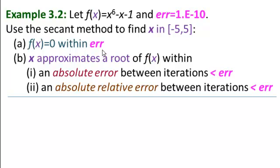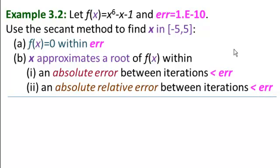That's like the previous problem that we did. Part B: x approximates a root of f(x) within — and there are two parts here. Part 1: an absolute error between iterations smaller than 10 to the minus 10. And Part 2: an absolute relative error between iterations that's less than 10 to the minus 10.